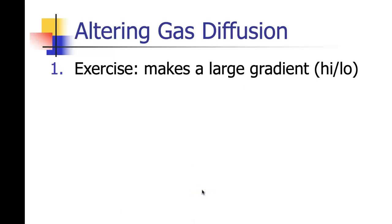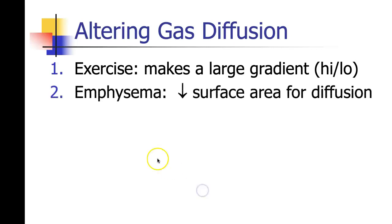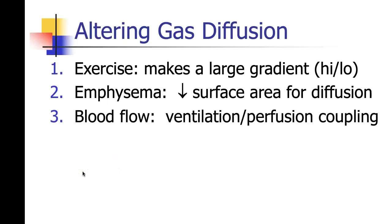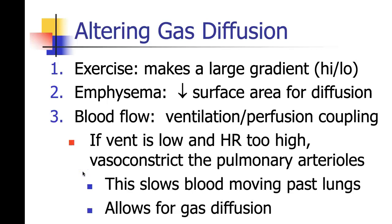So how do we alter gas diffusion, or when do we see gas diffusion being altered? Exercise is an instance that makes a really big difference — there's a large gradient of high to low. Emphysema affects gas diffusion primarily because you have a decreased surface area for diffusion, which we talked about in the last lecture. Blood flow involves ventilation-perfusion coupling. If ventilation is low and heart rate is too high, you get vasoconstriction of the pulmonary arterioles, which slows blood moving past the lungs allowing for gas diffusion.